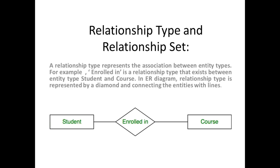Today I am going to explain degree and cardinality. A relationship type represents the association between entity types. For example, 'enrolled in' is a relationship type that exists between entity types student and course. In an ER diagram, a relationship type is represented by a diamond connecting the entities with lines. Here we can see two entities — student and course — connected through the 'enrolled in' relationship, represented by a diamond box.